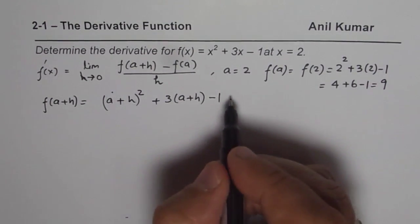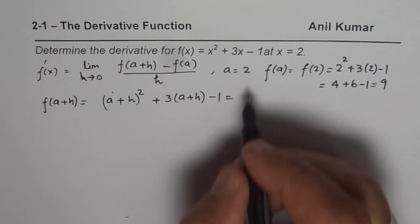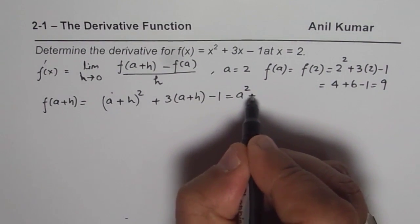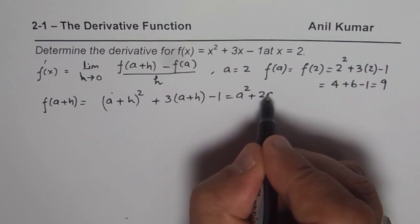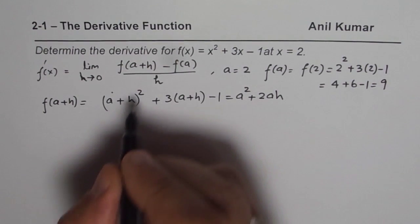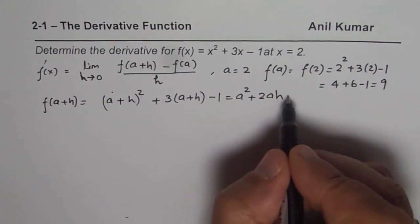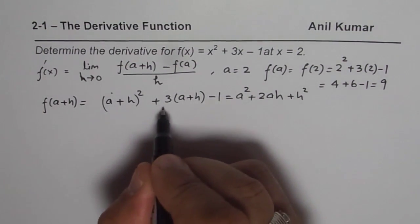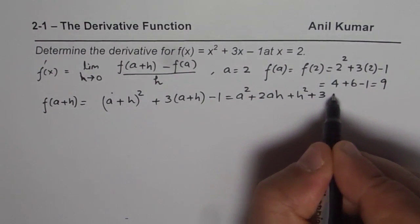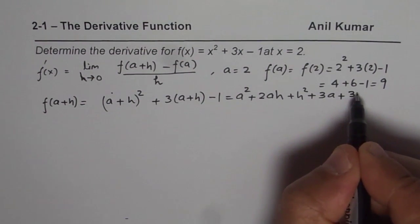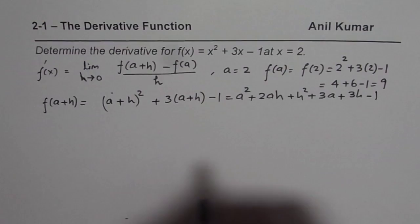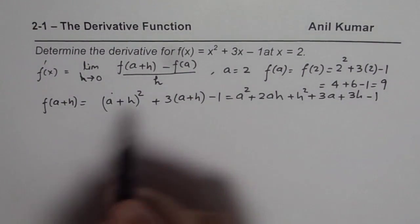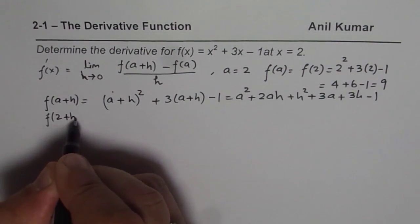Now we can expand this, so let us expand, we get a square plus 2 a h plus h square plus 3 a plus 3 h minus 1. Now in our case, a is 2, so we should actually find f of 2 plus h. You could have written directly 2 plus h here.